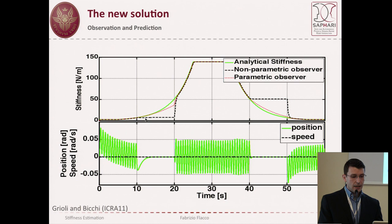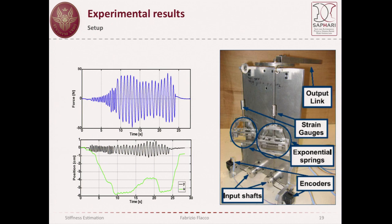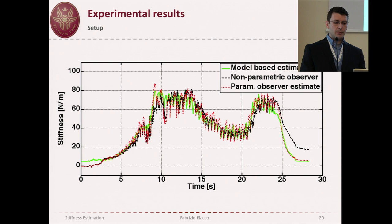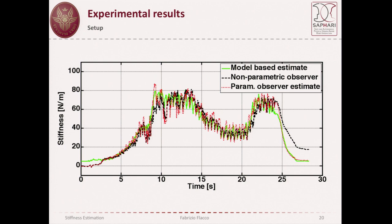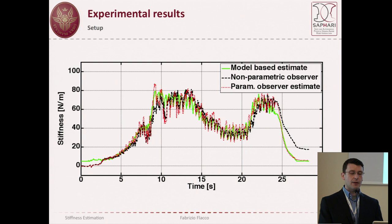They also have experimental results using an antagonistic arrangement with exponential springs. Since the transmission must be non-linear to allow stiffness variation, they used two exponential springs. The experimental results show that both the parametric and non-parametric observers track the stiffness. The parametric observer has better results because when velocity is zero it can continue to track the estimation.